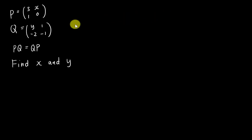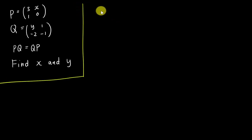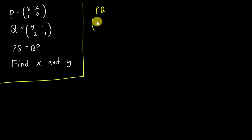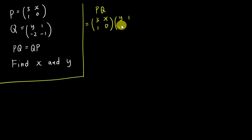This question is not really hard, but you need to know how to do the multiplication for matrices. Let's do PQ first. I will write out matrix P and multiply it with matrix Q, which has entries Y, 1, negative two, negative one.